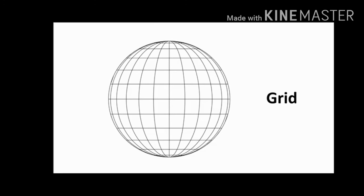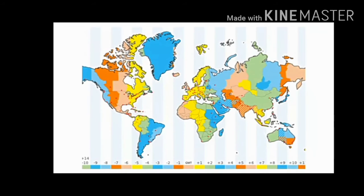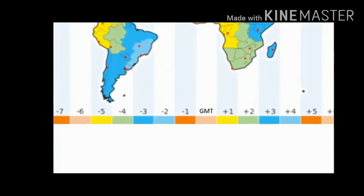In order to maintain international uniformity, one uniform time corresponding to the prime meridian is adopted by all countries. Every place in the world that lies on this meridian has the same time called the Greenwich Mean Time or GMT.